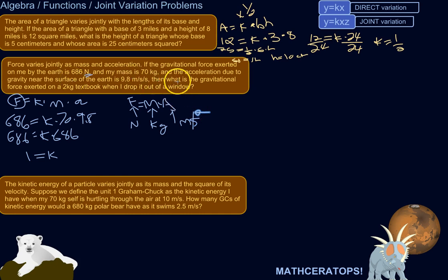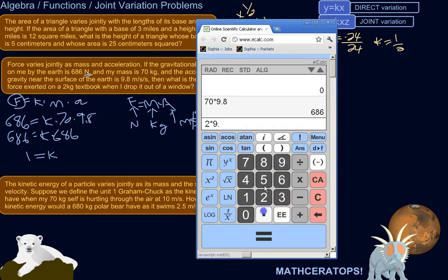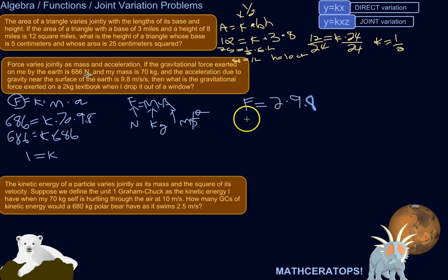The question is: what is the gravitational force exerted on a 2 kilogram textbook when I drop it out of a window? The force equals the mass of 2 kilograms times the acceleration due to gravity, which is still 9.8 meters per second squared. So 2 times 9.8 is 19.6. The force exerted on that textbook is 19.6 newtons.